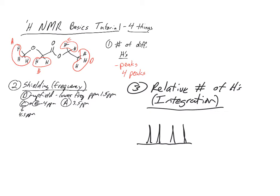The ratio should be — going in order A, B, C, D — three A's, two B's, two C's, and three D's. That should be the relative ratio of the peaks. The area underneath the peak for A and D should be relatively the same, and B and C should have the same relative area. Now we can differentiate between some of these based on this. The last part is really going to take it to another level when we think about coupling constants and actual splitting.